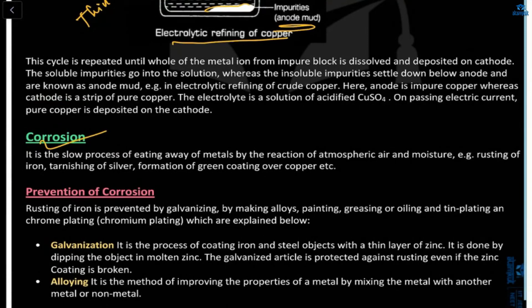Corrosion is a very slow process of eating away of metals — metals react with the atmosphere (air and moisture) to produce a surface coating. Examples: rusting of iron, tarnishing of silver, formation of a green coating over copper. Iron forms a brownish coating; copper forms a green coating.